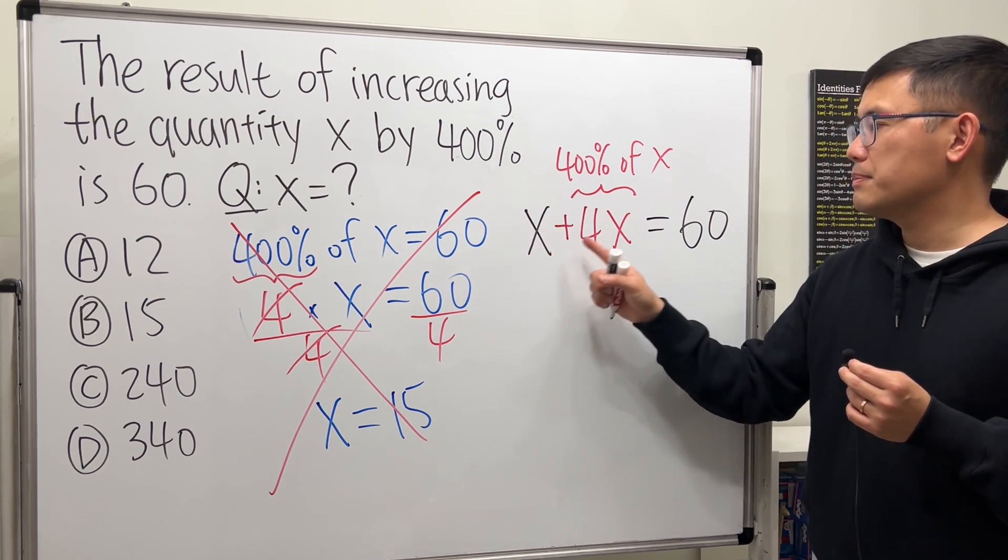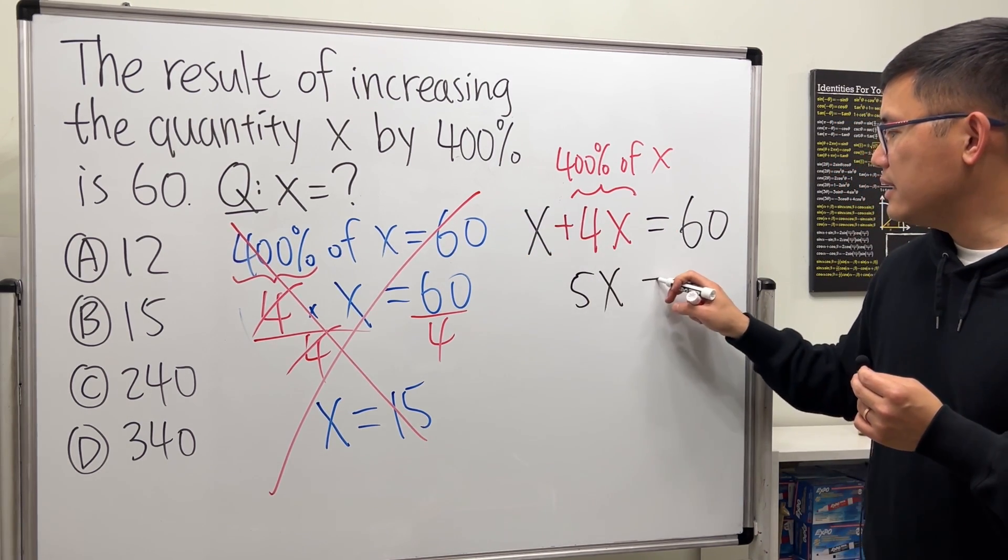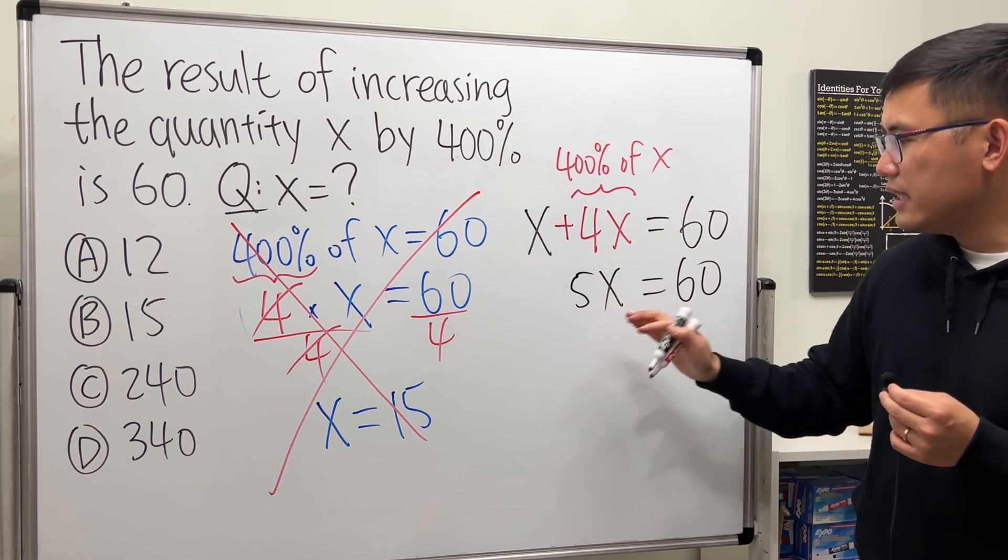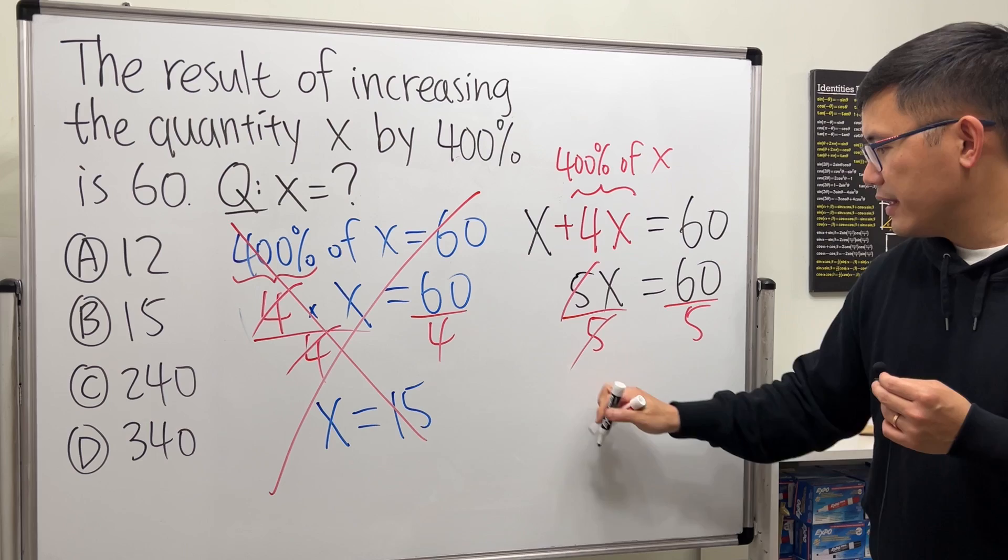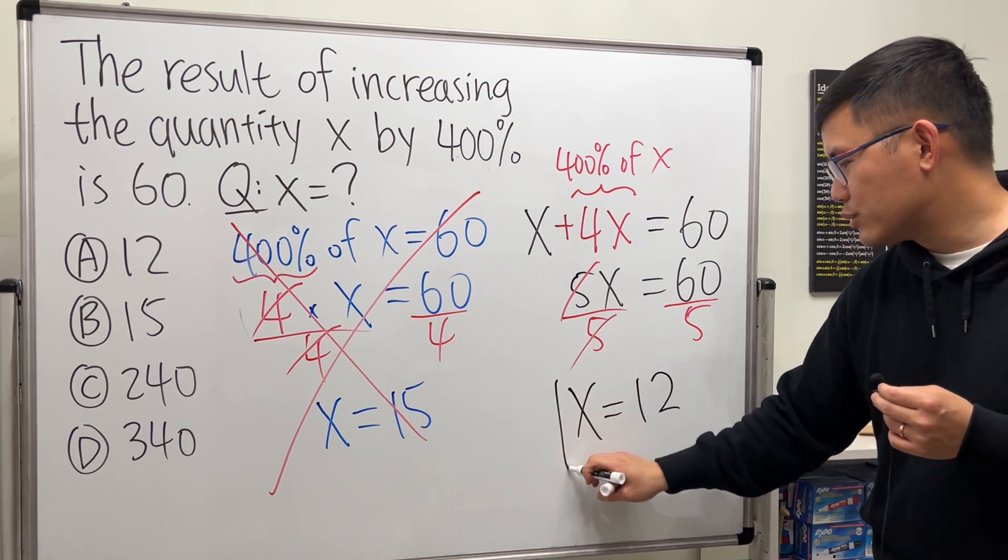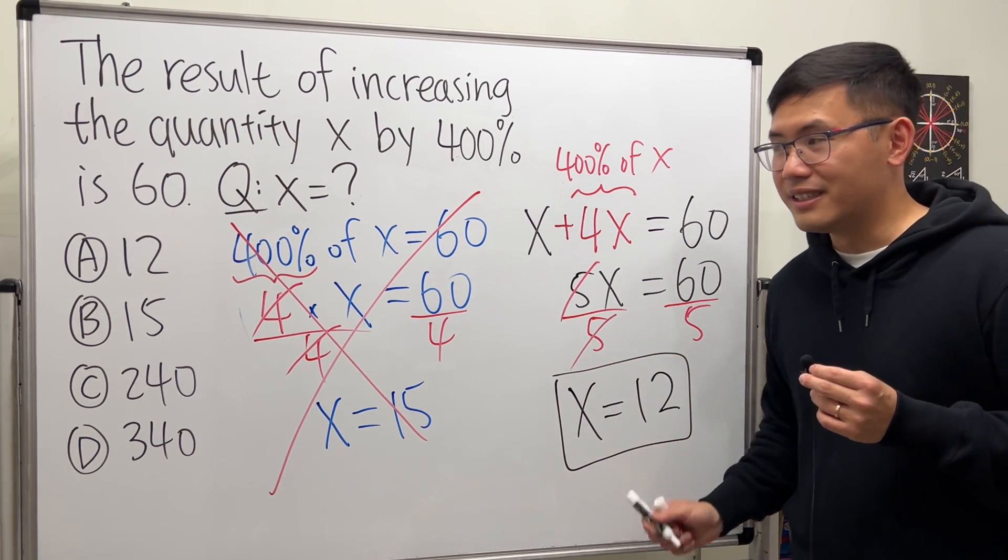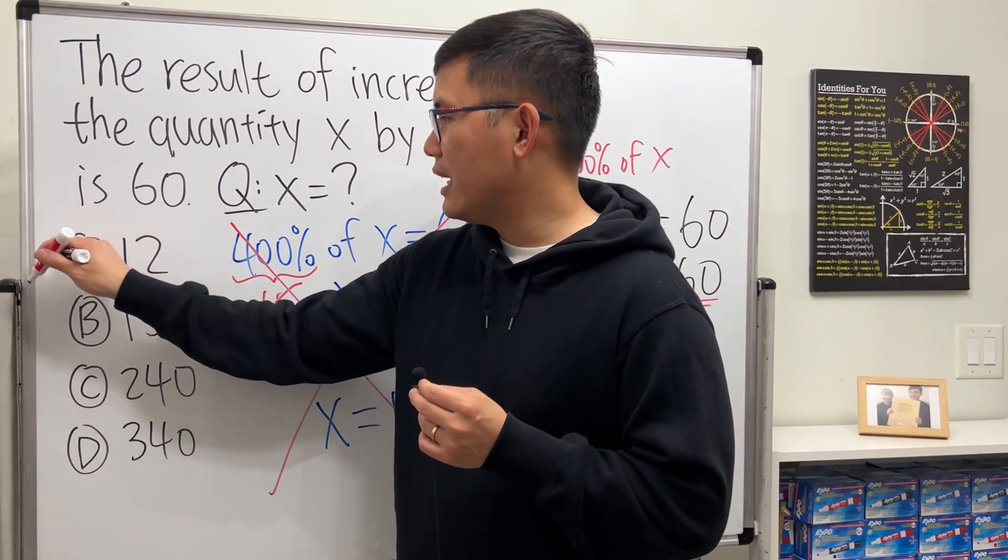Then divide both sides by 5. X equals 12, and this right here is the answer, so answer choice A.